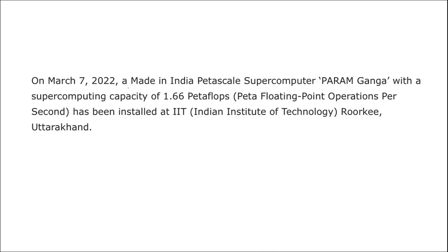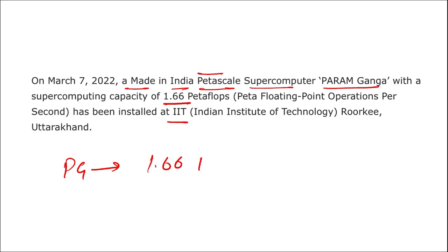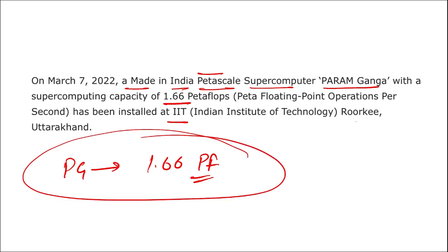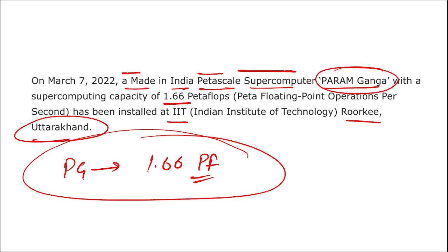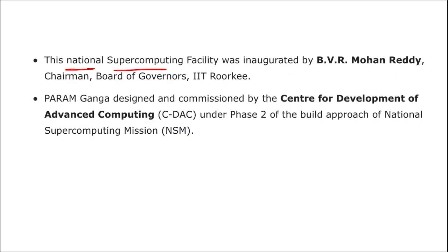Coming back — Param Ganga is a Made in India petascale supercomputer with a supercomputing capacity of 1.66 petaflops. It is located at IIT Roorkee, which is in Uttarakhand. The national supercomputing facility was inaugurated by BVR Mohan Reddy, who is the Chairman of the Board of Governors of IIT Roorkee.